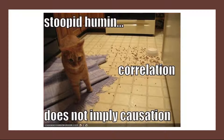Another reason researchers choose correlational research over an experiment is that the statistical relationship of interest is thought to be causal, but the researcher cannot manipulate the independent variable because it's impossible, impractical, or unethical. For example, while a researcher might be interested in the relationship between the frequency people use cannabis and their memory abilities, they can't ethically manipulate the frequency that people use cannabis. As such, they must simply measure cannabis use frequency and memory abilities using a standardized test, then determine whether they are statistically related.